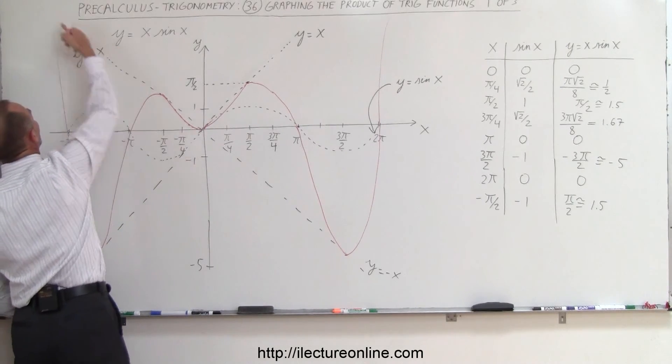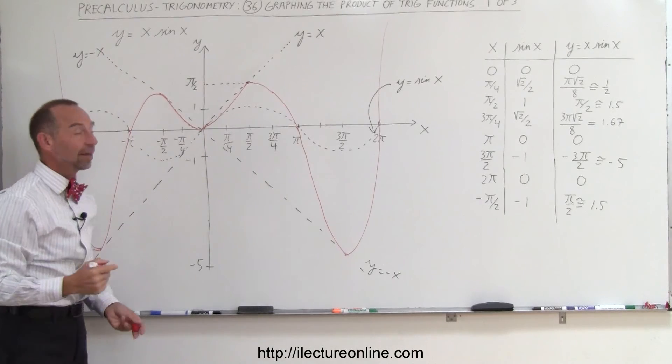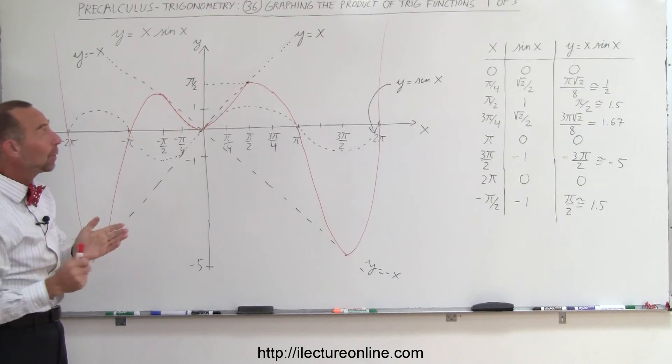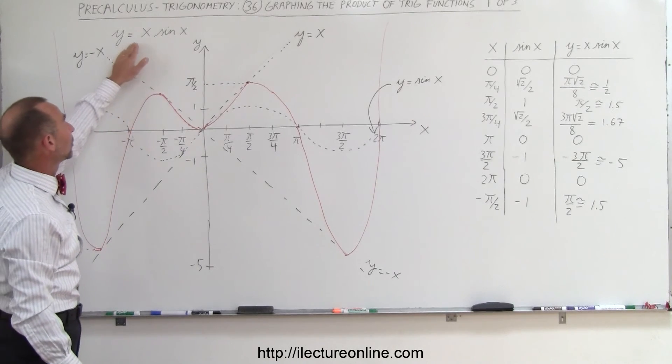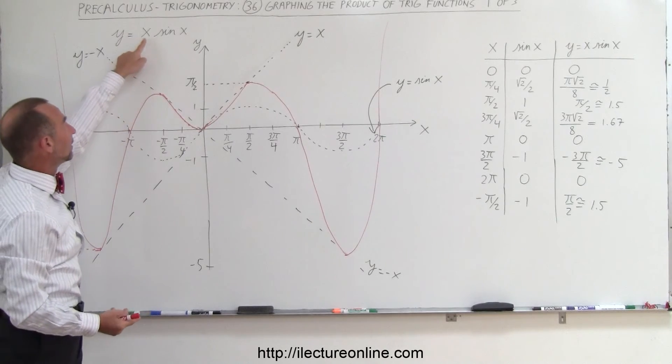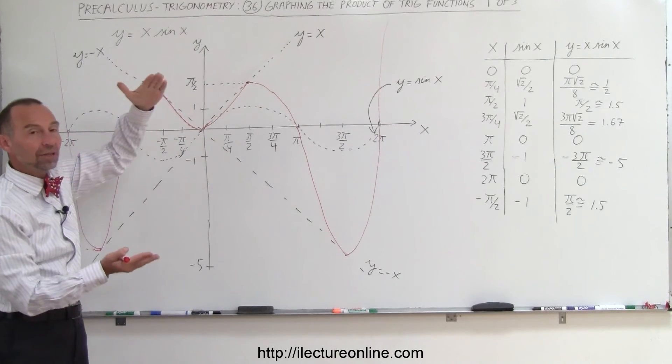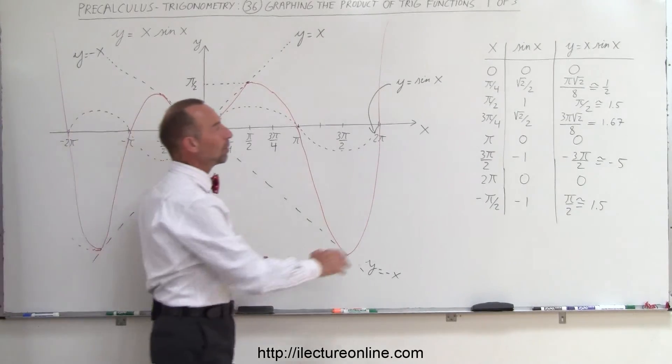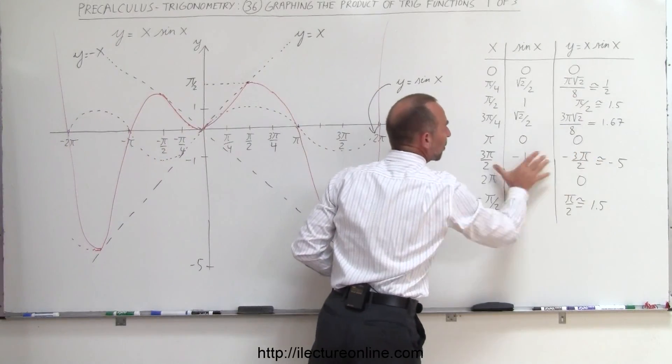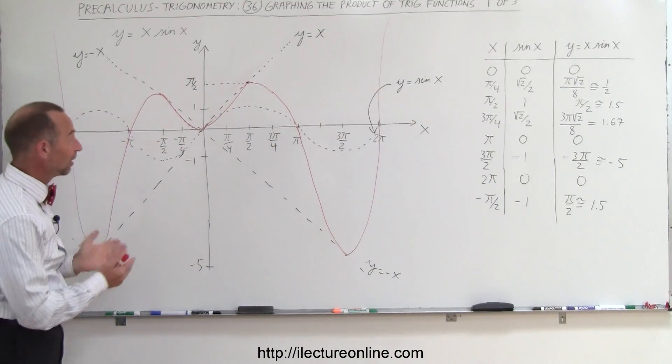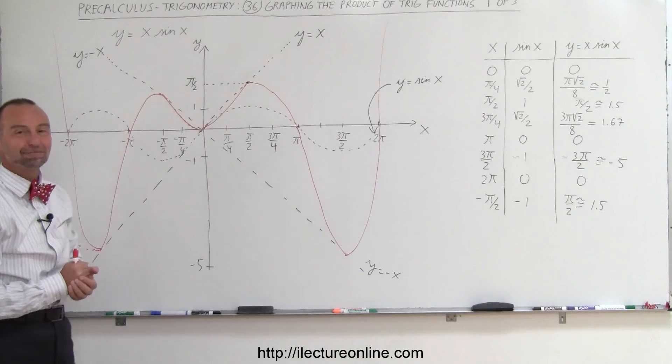And then way up there where it would meet the y equals negative x line. So that's what the product of the two will look like. Typically, when you have a product of something like y equals x times a trigonometric function, this function will simply bound the plus or minus of the trigonometric function, just make it increase because of the multiplication factor that we find when we multiply the two functions together. And so, it's kind of an interesting graph, but that's what it looks like.